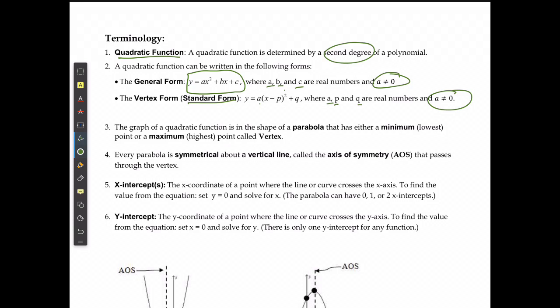The graph of a quadratic function is in the shape of a parabola that either has a minimum or lowest point or a maximum or highest point that occurs at the vertex. Every parabola is going to be symmetrical about a vertical line called the axis of symmetry. This is always going to be where the parabola and the vertex meet.